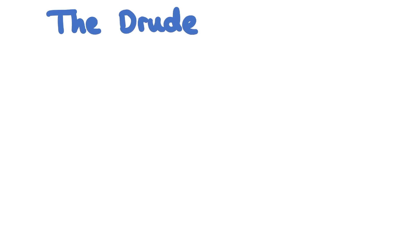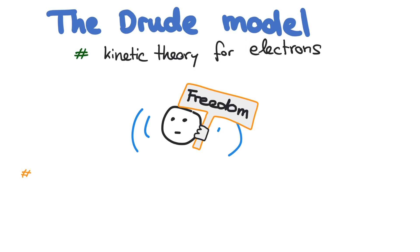The Drude theory is basically a kinetic theory for electrons. It is very crude in the sense that it assumes electrons to move freely in metals. But despite its crudeness, it works remarkably well.